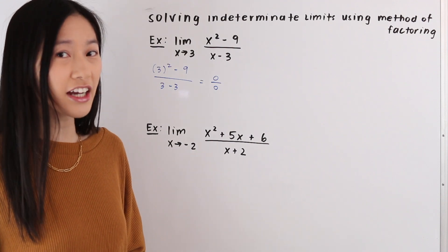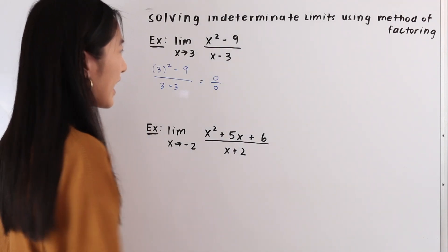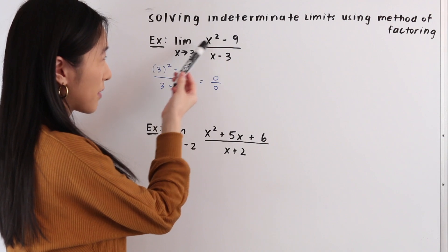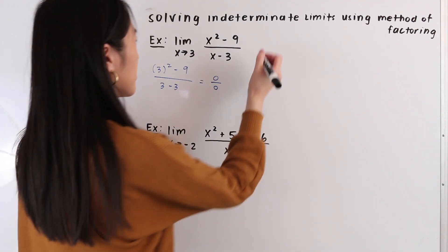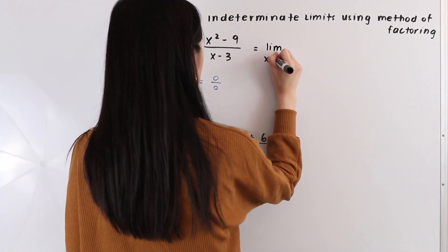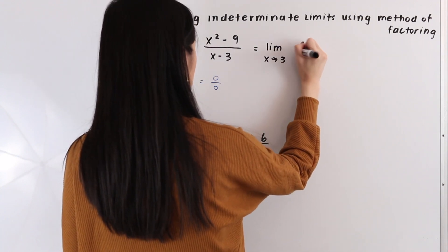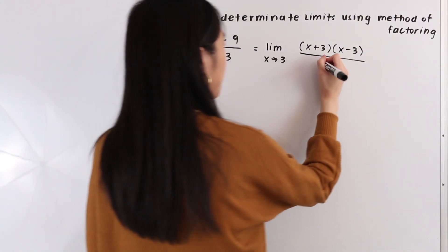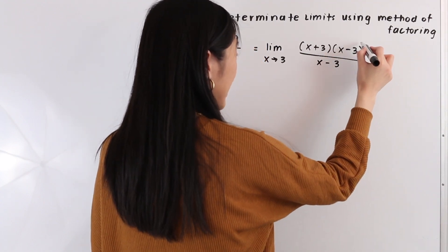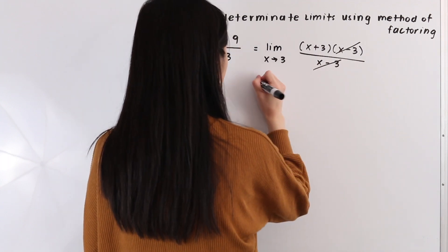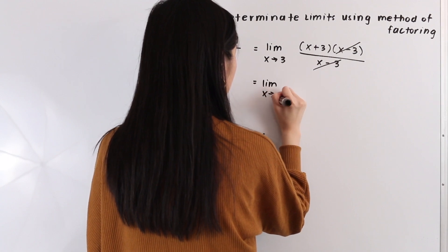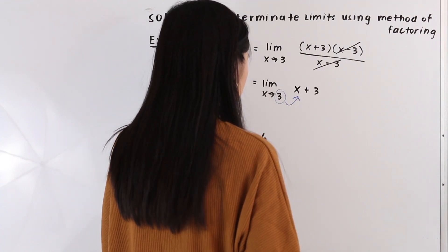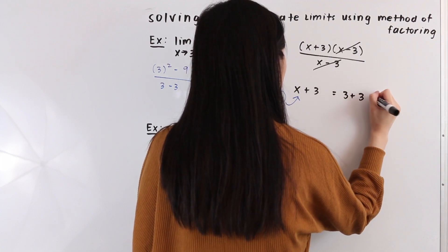The next method we like to try is the method of factoring. Looking at f of x, we can see that we have a difference of two squares in the numerator: x squared minus 9. So we have the limit as x approaches 3, and the numerator factors to x plus 3 times x minus 3, over x minus 3 in the denominator. The x minus 3 terms cancel, simplifying to the limit as x approaches 3 of x plus 3. Plugging in 3, we get 3 plus 3, which equals 6.